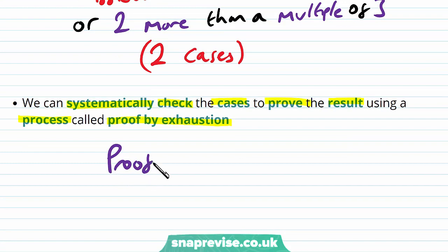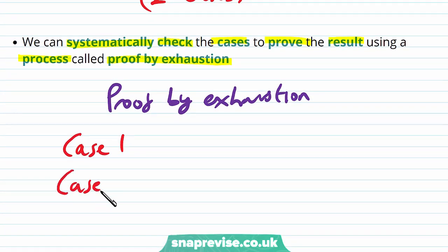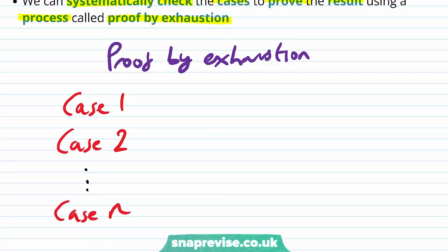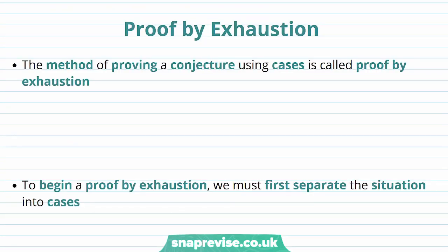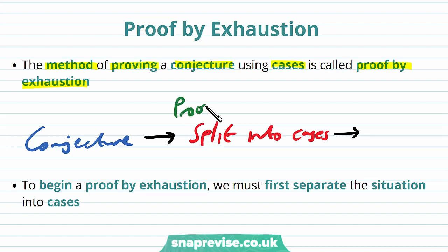We use proof by exhaustion in cases where there are finitely many cases to check — case 1, case 2, and so on up to at most case n. For each case we check whether the result is true or false. The method of proving a conjecture using cases is called proof by exhaustion: we take our conjecture, split it into cases, prove each one, and this gives us our theorem.